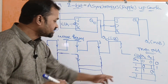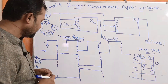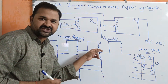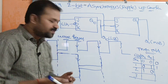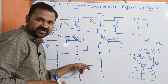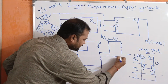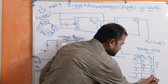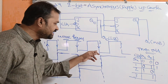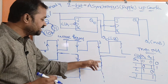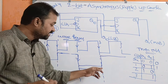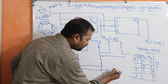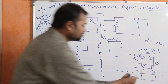Now let us apply the third clock pulse. At the negative edge of the third clock pulse, Q0 is complemented from 0 to 1. For Q1, there is no falling edge of Q0 here — only a rising edge — so there is no change in Q1. Q1 remains 1. So the state is Q1=1, Q0=1, which is decimal 3.